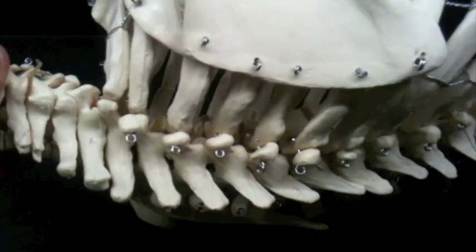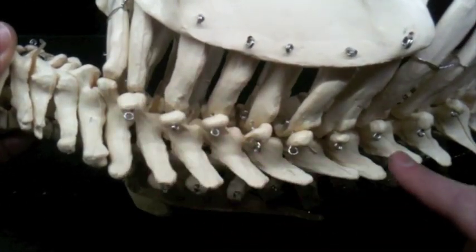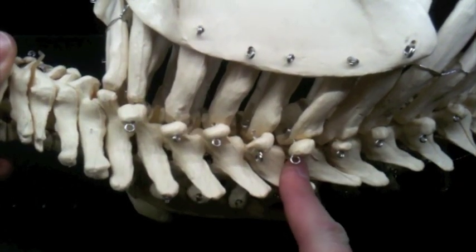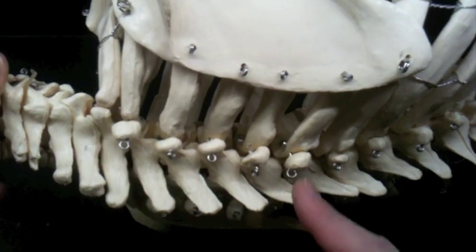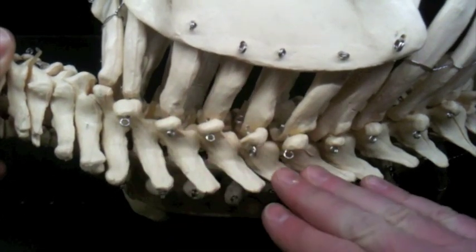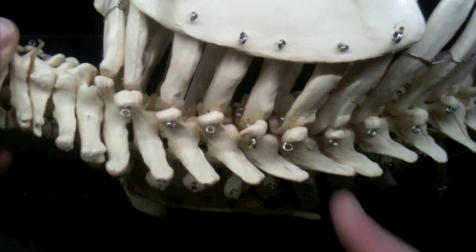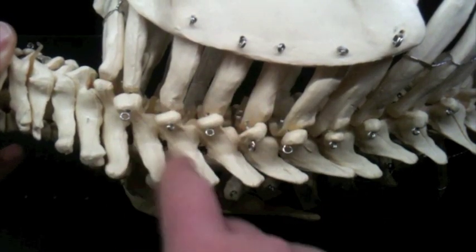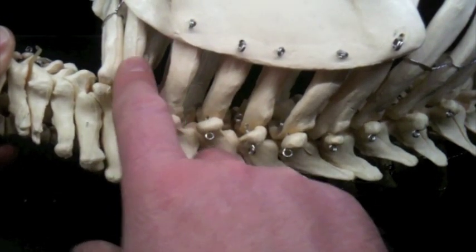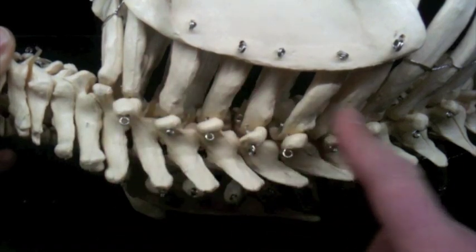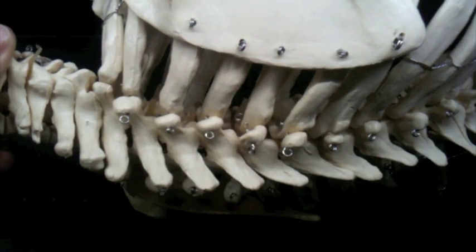Then there are 12 vertebrae that are thoracic vertebrae. Thoracic vertebrae are easily identifiable because of the sort of downward pointing spinous process. Even the early ones that don't have that, they all articulate with ribs. So there are 12 ribs on each side, 24 ribs in all.